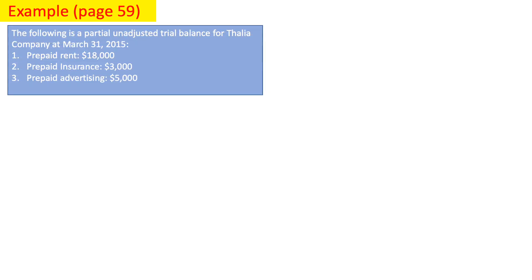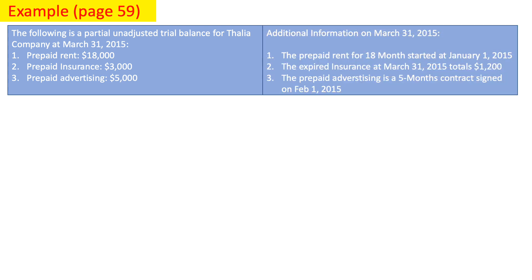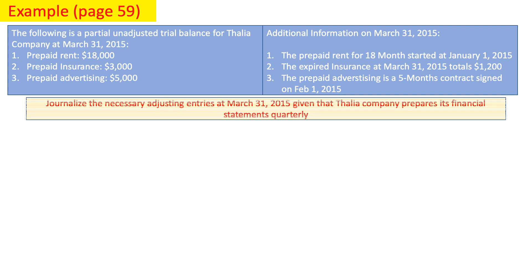Let's have an example on prepaid expenses. The following is a partial unadjusted trial balance for Thalia Company at March 31, 2015: prepaid rent $18,000, prepaid insurance $3,000, prepaid advertising $5,000. Additional information on March 31, 2015: first, the prepaid rent for 18 months started at January 1, 2015; second, the expired insurance at March 31, 2015 totals $1,200; third, the prepaid advertising is a 5-month contract signed on February 1, 2015. We have to journalize the necessary adjusting entries at March 31, 2015, given that Thalia Company prepares its financial statements quarterly — meaning every 3 months.